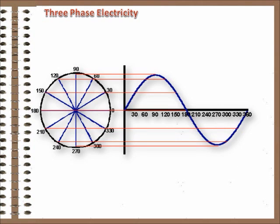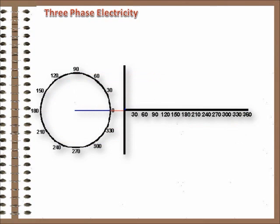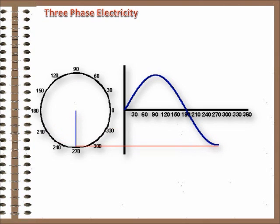The potential difference and associated current flow, created by the rotating magnet, rises and falls as the magnetic field approaches and passes by the wire conductor. That rise and fall can be graphed and shows as a sine wave.